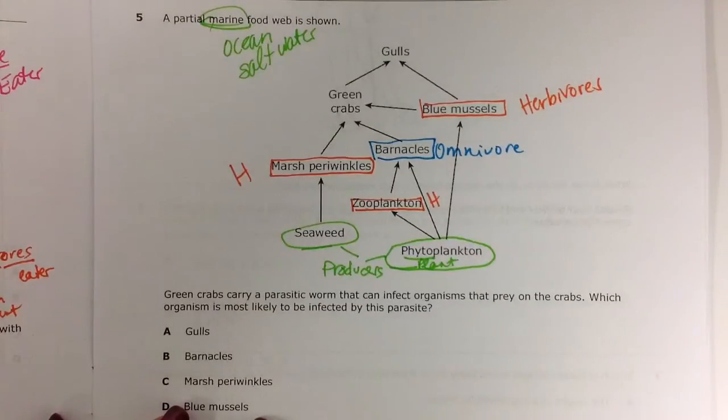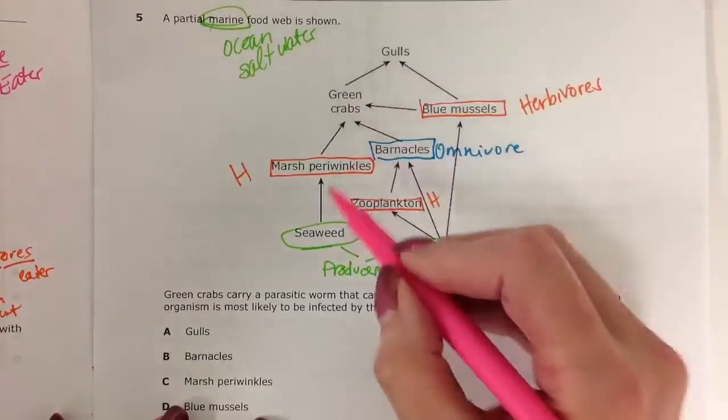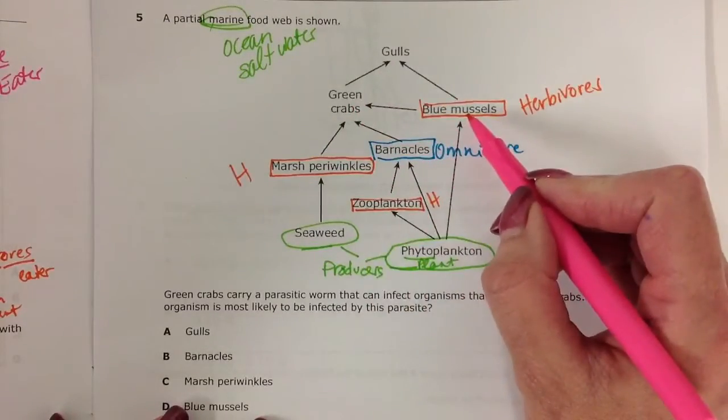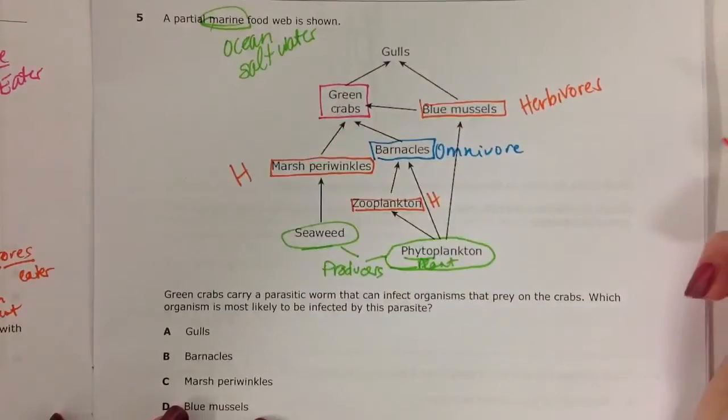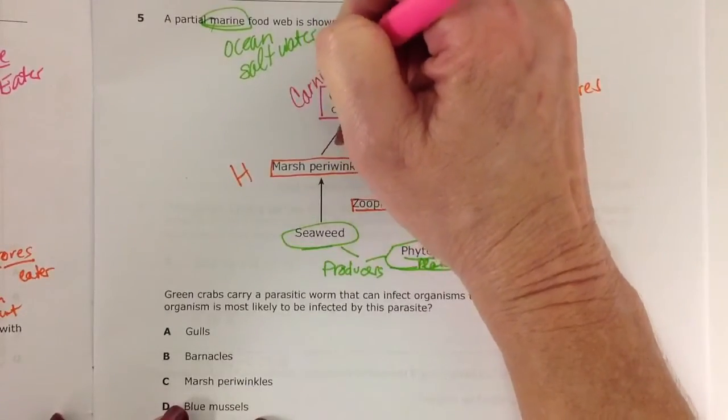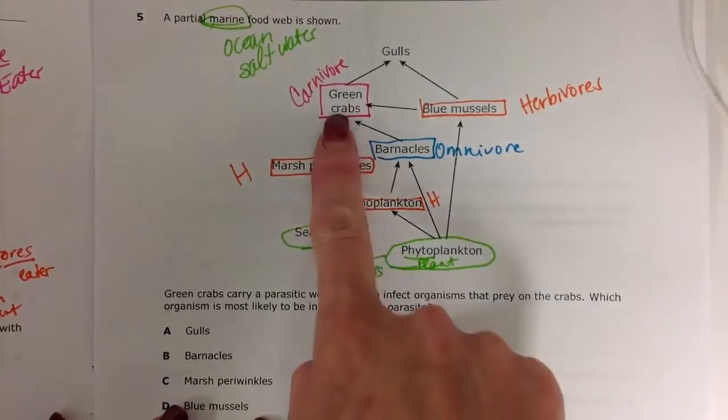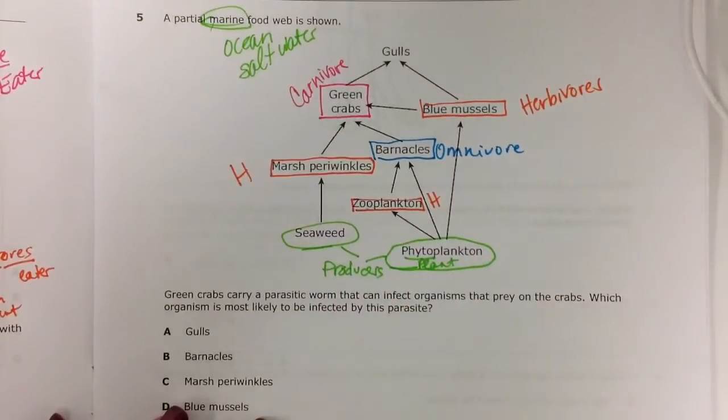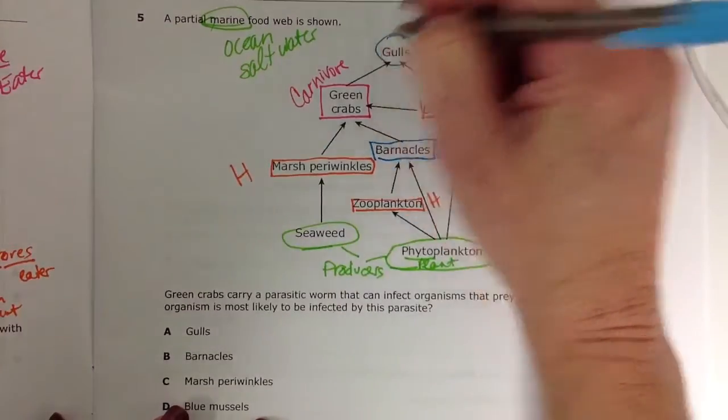Our green crabs are getting energy from herbivore, omnivore, herbivore. So our green crab is going to be our carnivore. And the gull is eating the crabs and the mussels. The gull is also going to be a carnivore.